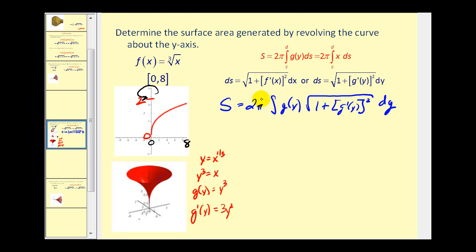Let's set this up. It's 2π times the definite integral from zero to two of g(y), which is the radius expressed in terms of y. That's y³ times the square root of 1 + [g'(y)]². Well, g'(y) is 3y², so if we square this, we'll have 9y⁴, giving us the integral with respect to y.